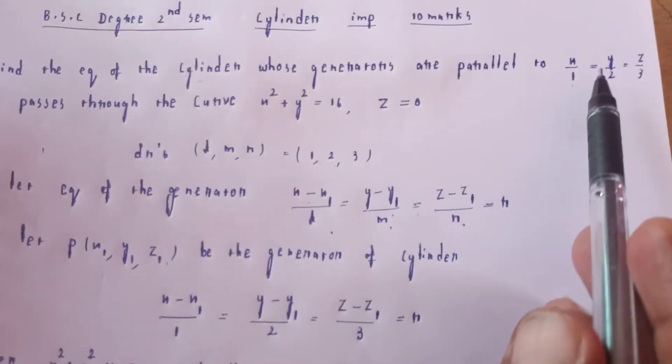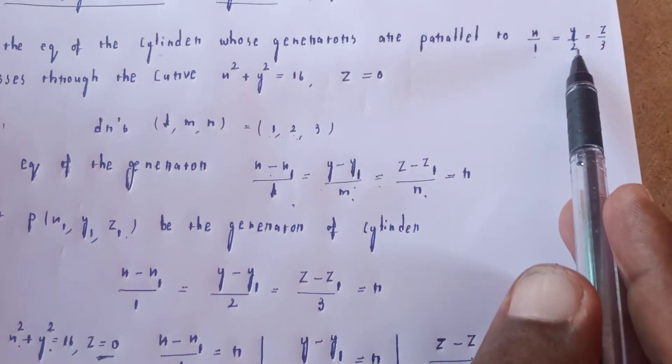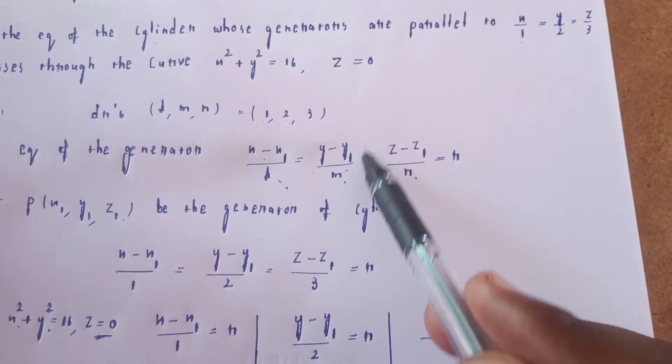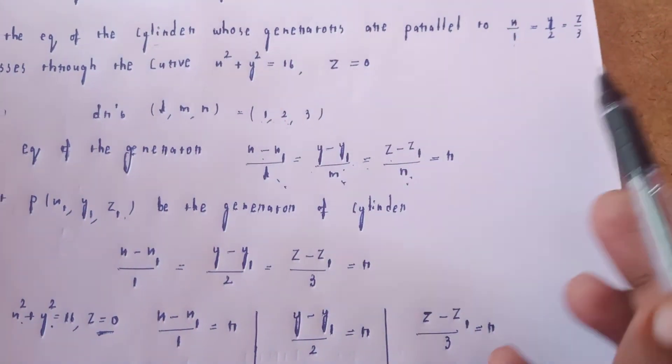Put r = -z₁/3 into the equation. We use x minus x₁ = r, y minus y₁ = 2r, z minus z₁ = 3r with l, m, n = 1, 2, 3.